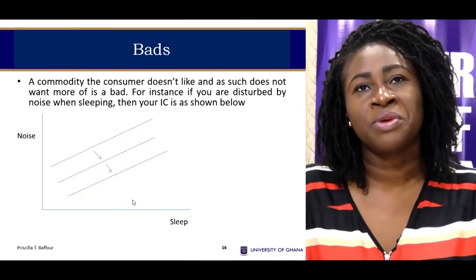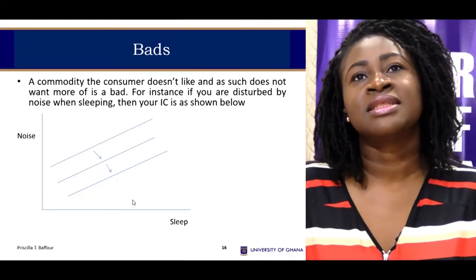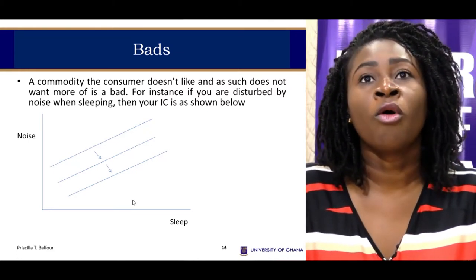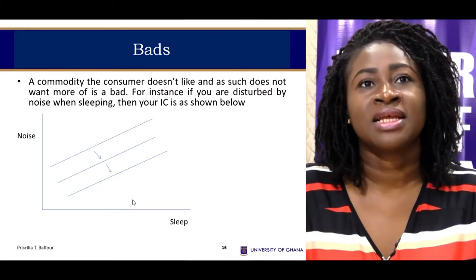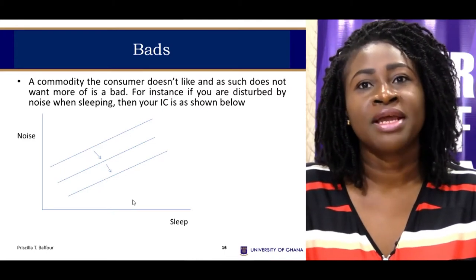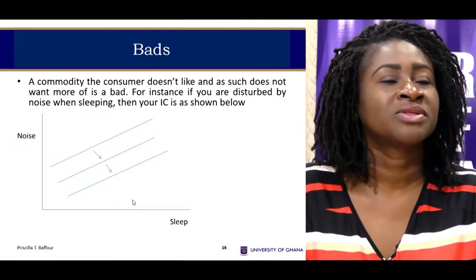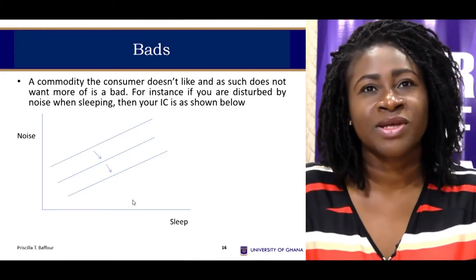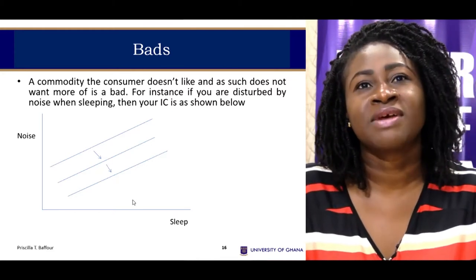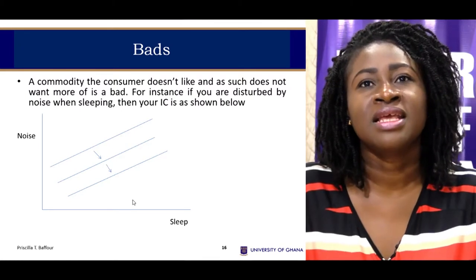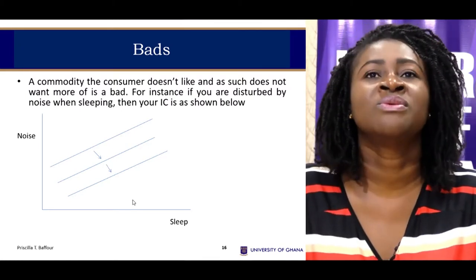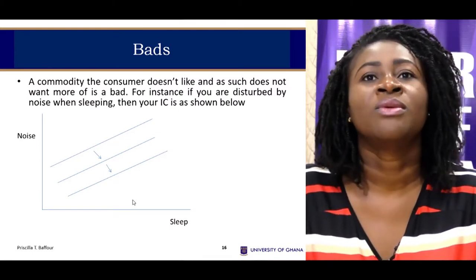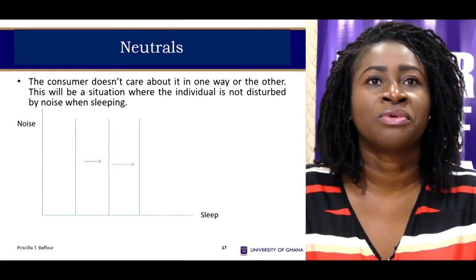Another scenario involves bads — commodities that an individual does not like and does not want more of. For example, if you are a light sleeper trying to take a nap, you don't want more noise. The more exposure to noise, the lower your satisfaction. On the indifference curve for a bad versus a good, satisfaction increases as you move down the curves, since the individual wants more of the good and less of the bad.